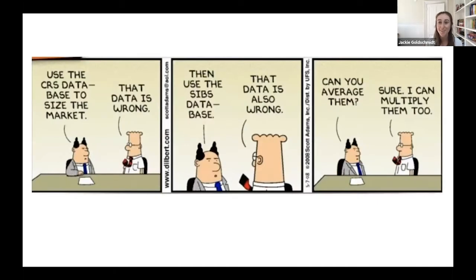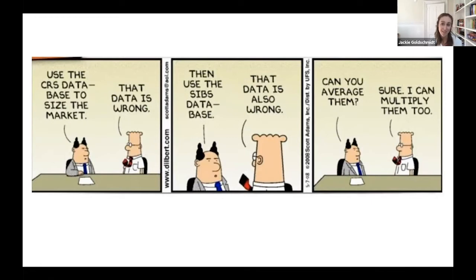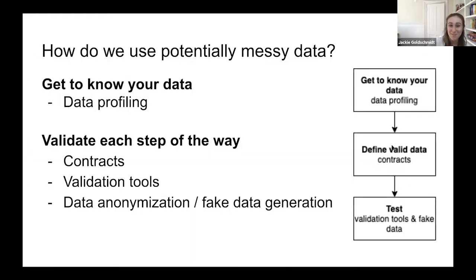I'm going to start with a Dilbert cartoon where Dilbert's manager says 'use the CRS database to size the market' and Dilbert responds 'but that data is wrong.' His manager says 'then use another database' and Dilbert says 'that data is also wrong.' His manager has the great idea: 'can you average the two databases?' and Dilbert says 'sure, I can multiply them too.' What we're going to be talking about is how do we avoid getting into a situation where we are averaging or multiplying data to come up with an outcome.